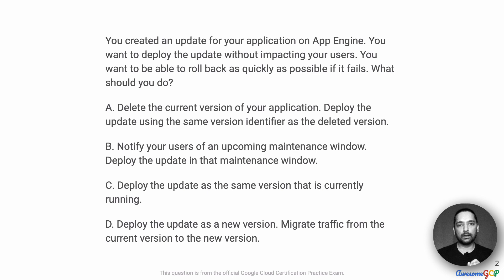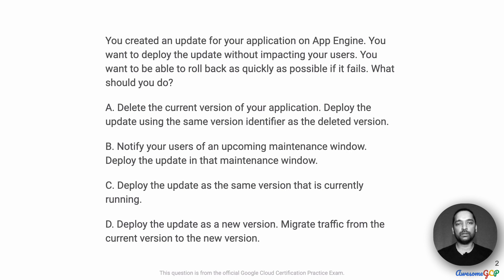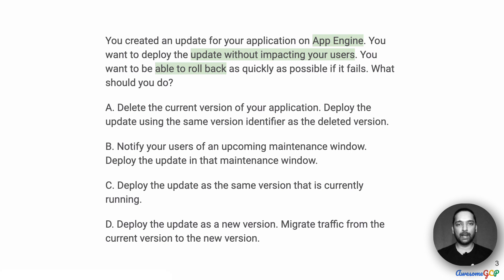In this project scenario, your company already has an application running on App Engine. You now have a new update to that which you want to deploy. However, the business requires that you do not impact any of your current users. You also want to be able to roll back quickly in case there is a problem with the update. The key parts of this question are: application running on App Engine, we don't want to impact users, and we want to be able to roll back quickly.